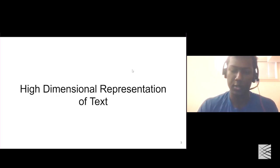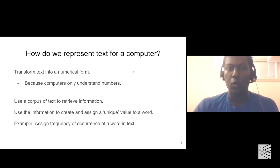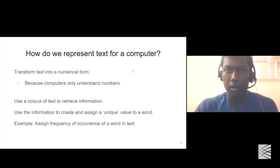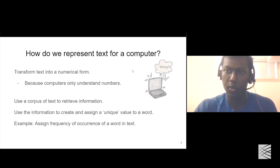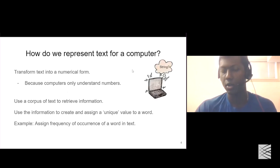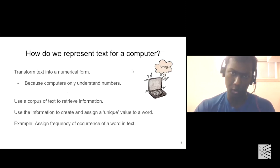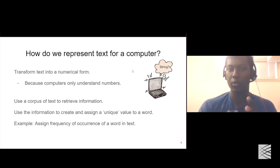So, high-dimensional representations of text. In a computer, at a very low level, we can represent information only in a binary format. If you give text to a computer and ask it to perform mathematical operations, it will go haywire. So what we do is transform the text into some kind of numeric representation — usually a list of numbers.